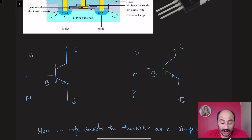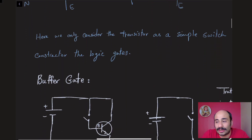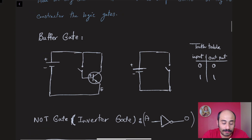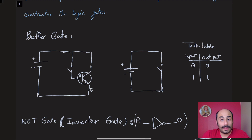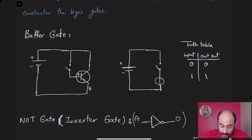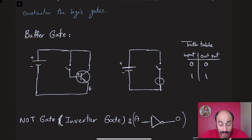The first gate I want to mention is the buffer gate. It's somewhat trivial — you might ask why it exists. What it does is it doesn't change any operation on the signal itself. If the input is zero, the switch is open, and your output is also zero — your lamp won't turn on. If the switch is closed, your lamp turns on. Buffer gates are similar to what we call the identity gate in quantum mechanics.